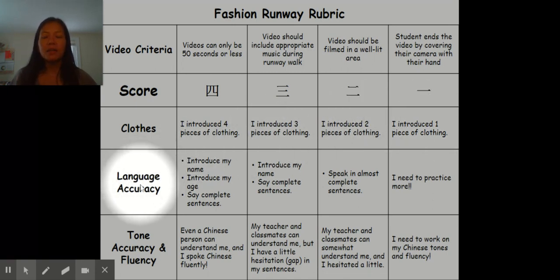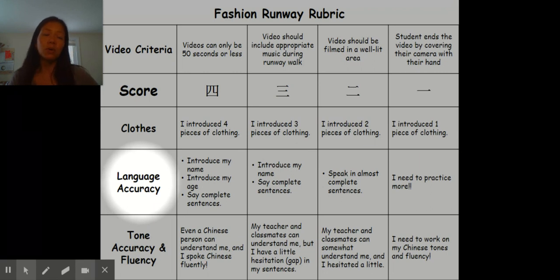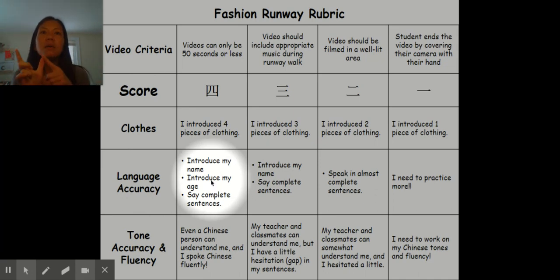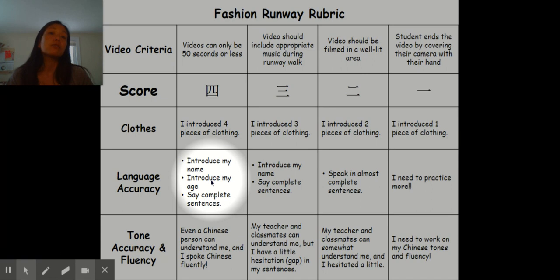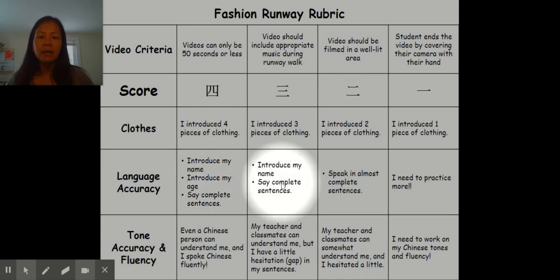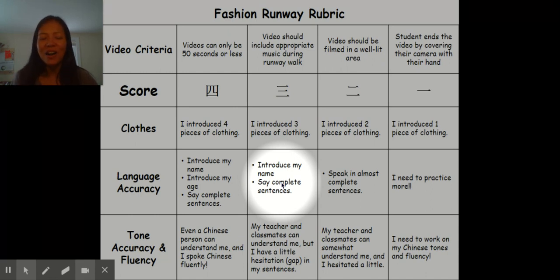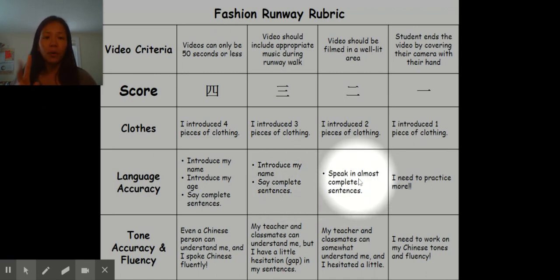This category is called language accuracy — meaning what Chinese sentences are you speaking. To get four points (四), you need to introduce your name, your age, and speak in complete sentences — not just saying 长休 or 短休, but actually using full phrases and sentences. For 三, you say your name using 我叫 — 我叫 Payne, 我叫 Sarah, 我叫 Abriel — and then speak in sentences. For 二, you speak in almost complete sentences, and 一 means you just need to practice a little more.